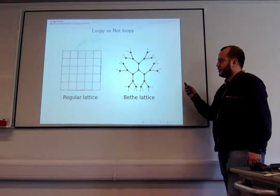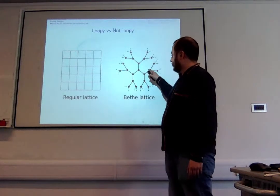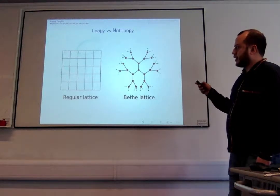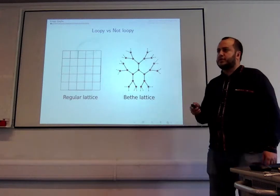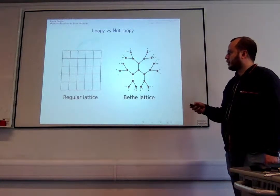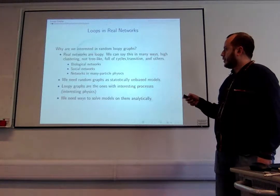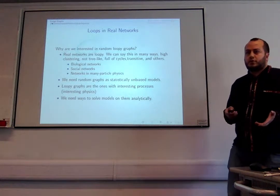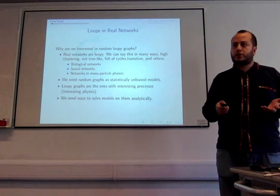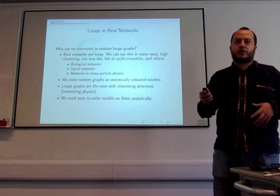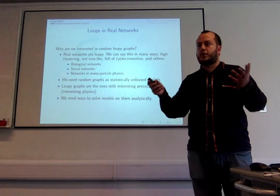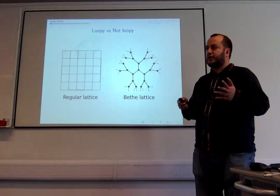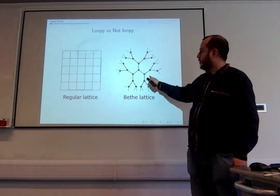What do I mean by loopy? Basically, it's not tree-like, and there are many options for this. I'm particularly interested in the case where the graphs are sparse — that means the number of edges is proportional to the system size. The main reason I'm interested is that real networks we observe are usually loopy: biological networks, social networks, or networks in particle physics like a lattice in a solid in condensed matter.